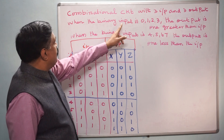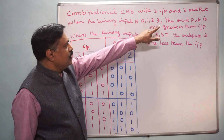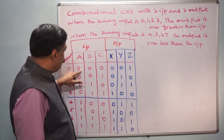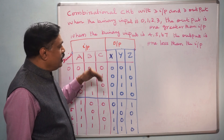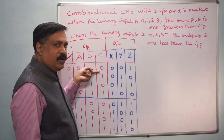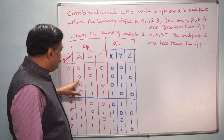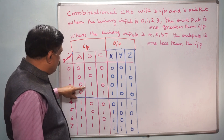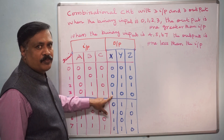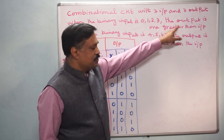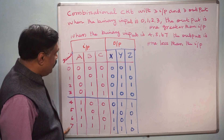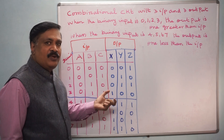When the input is 0, 1, 2, 3, the output is 1 greater than the input. So when the input is 0, the output is 001. When the input is 1, the output is 2. When the input is 2, the output is 3. When the input is 3, the output is 4. This is the first condition. And second, when the input is 4, 5, 6, 7, the output is 1 less than the input.